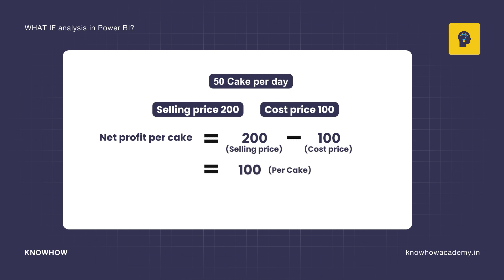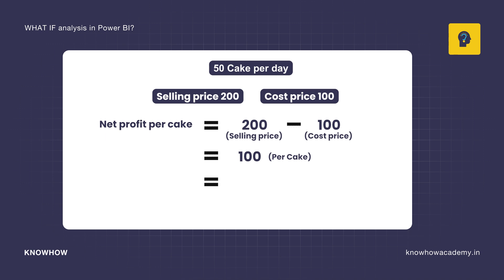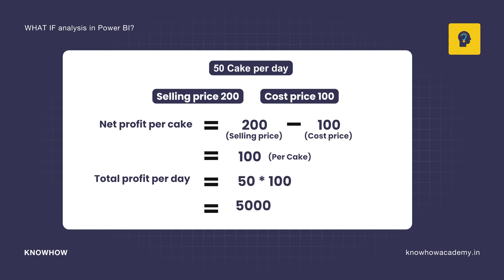On average, if you are selling 50 cakes per day, your total profit per day is 50 multiplied by Rs. 100, that is Rs. 5,000 per day.